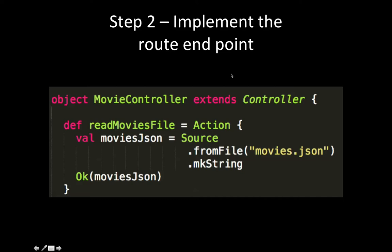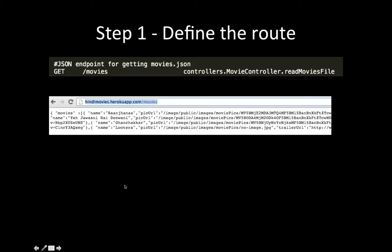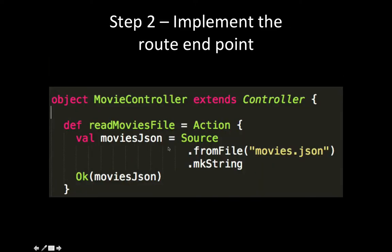The second thing you need to do is implement the endpoint that you just created. We create a new controller — in this case, I've named it as a MovieController — which extends the controller, reads the movies JSON file from the file system, and serves it. So we have the MoviesController readMoviesFile method. That takes care of reading the file.